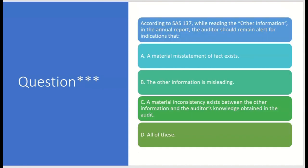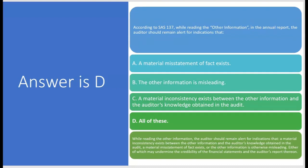According to SAS 137, while reading the other information in the annual report, the auditor should remain alert for indications that — A, a material misstatement of fact exists; B, the other information is misleading; C, a material inconsistency exists between the other information and the auditor's knowledge obtained in the audit. The answer is D — all of these. Any of these would possibly undermine the credibility of the financial statements.